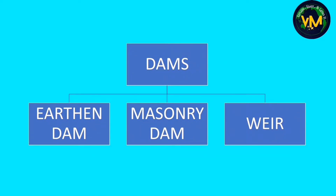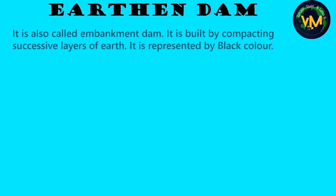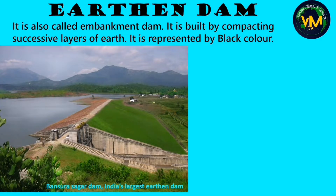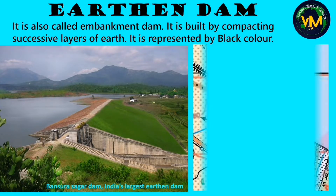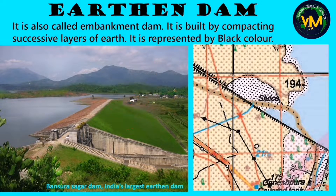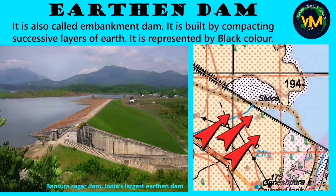An earthen dam is also called an embankment dam. It is built by compacting successive layers of earth, one over the other, and it is represented in black color. This is a picture of Bansura Sagar Dam, India's largest earthen dam, and this is how an earthen dam looks in our topographical map — represented in black color.